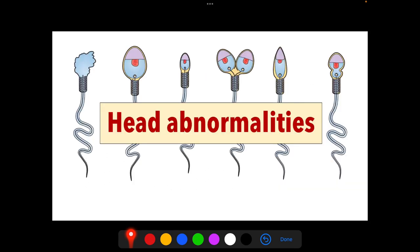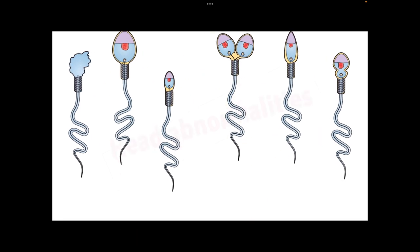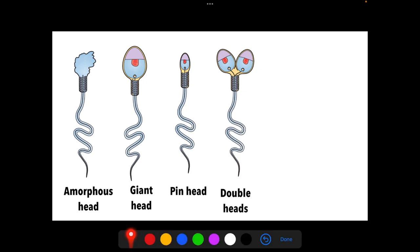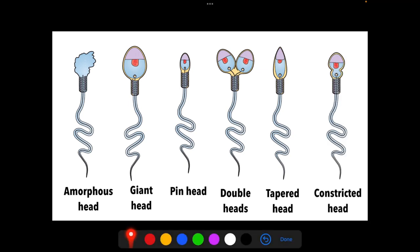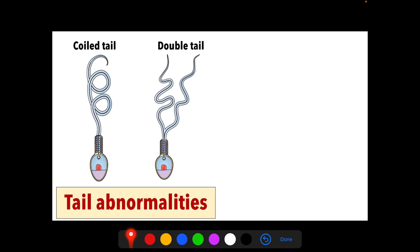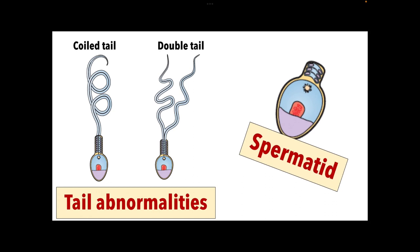Head abnormalities include: amorphous head, giant head, thin head, double heads, tapered heads — which usually indicate the presence of varicocele (an enlarged scrotal vein) — and constricted heads. Tail abnormalities include coiled tails, double tails, and the presence of immature sperm (spermatids). These abnormalities can be observed in stained smears under the microscope.